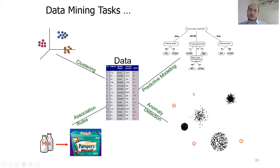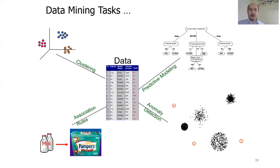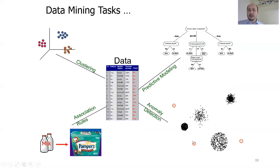Today we will concentrate on predictive modeling. Clustering is about finding similar data and grouping it into the same cluster. Another important area is finding association rules between items, like milk and diapers. Finally, outlier detection identifies data points that are significantly different — these can be very important in tasks like medical decision making.